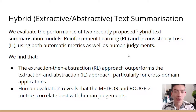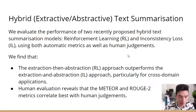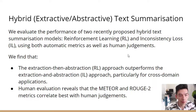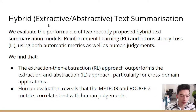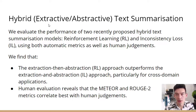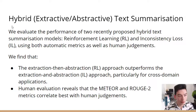Traditionally, text summarization — which is converting a big block of text into a short, concise sentence — is usually done by an extractive or an abstractive approach. Extractive approaches are when the algorithm selects a sentence that it thinks best summarizes and represents the document. Whereas an abstractive approach, which is normally a neural network, tries to understand the document and generate from scratch a new sentence that best summarizes it. But recently, hybrid text summarization has come about, which is a combination of the two.